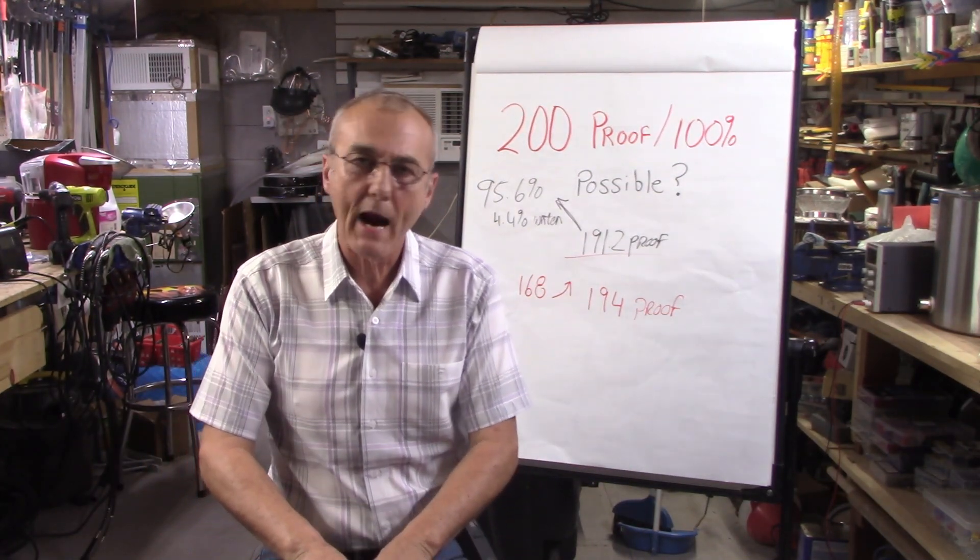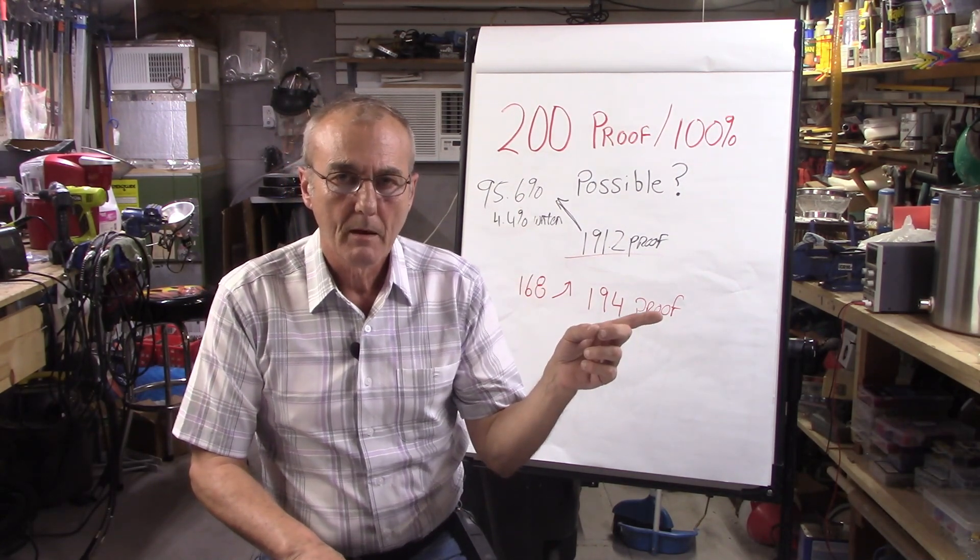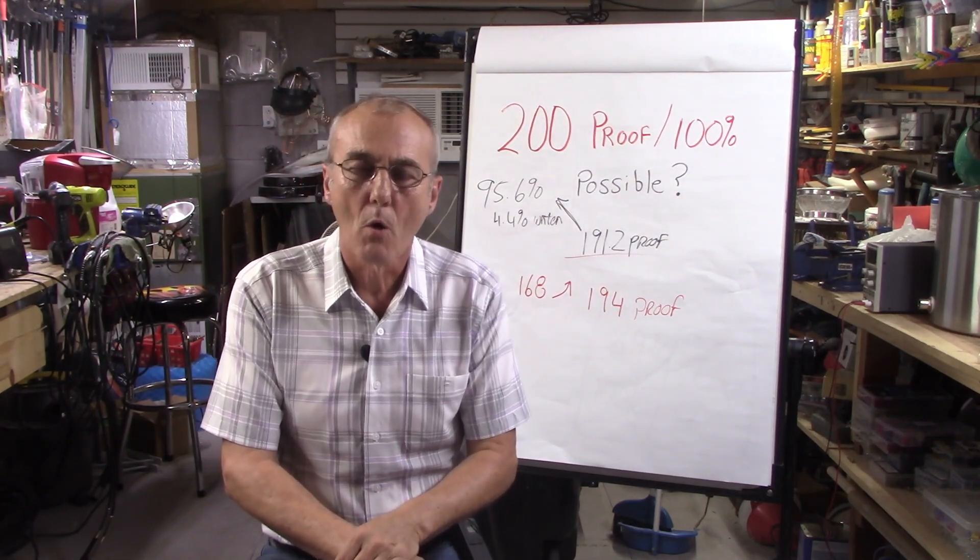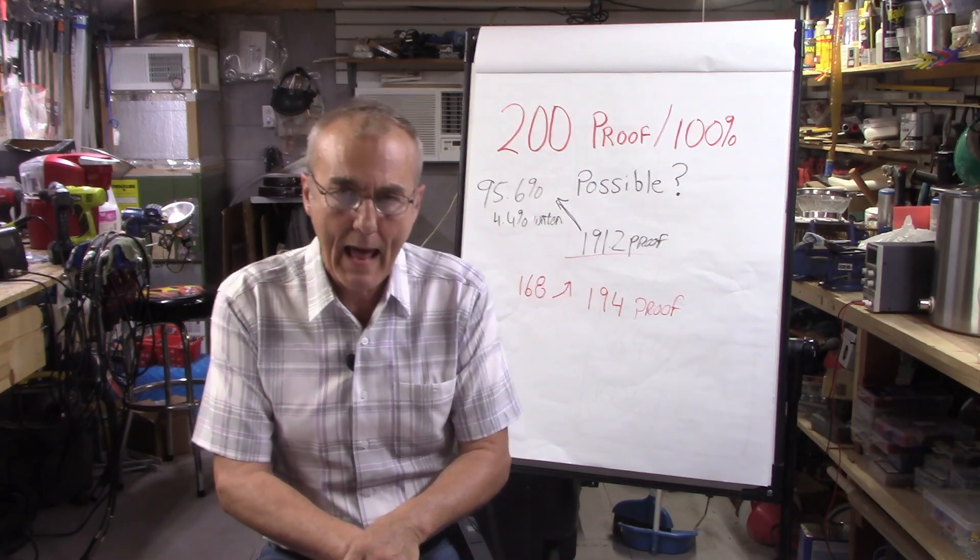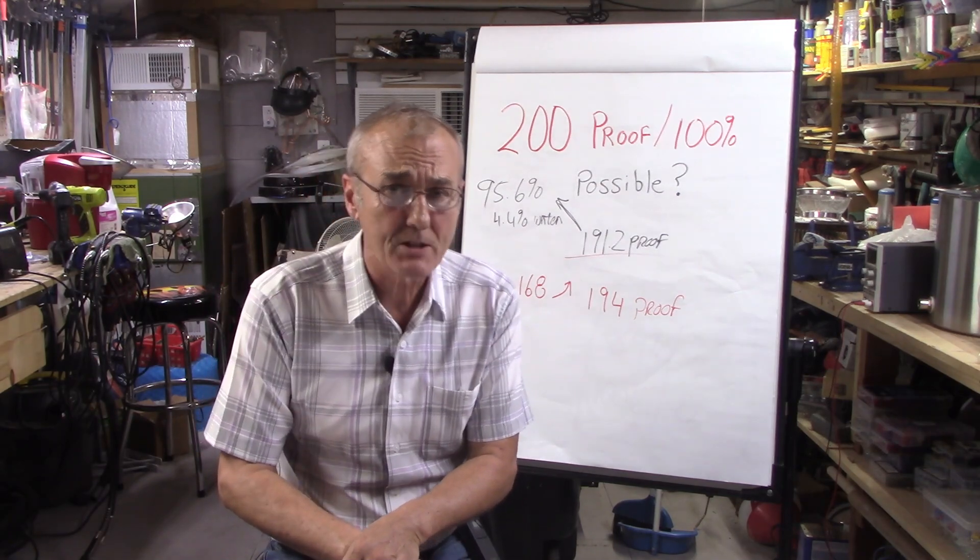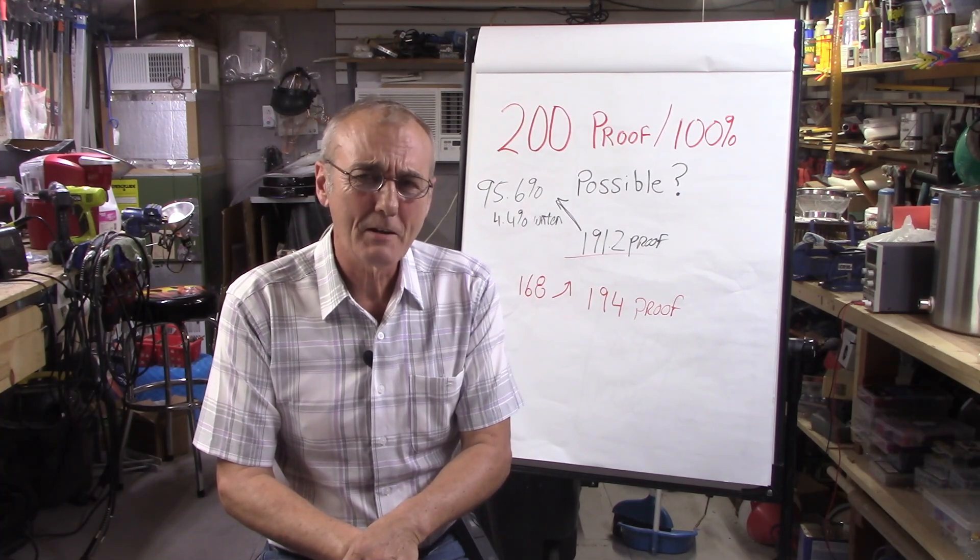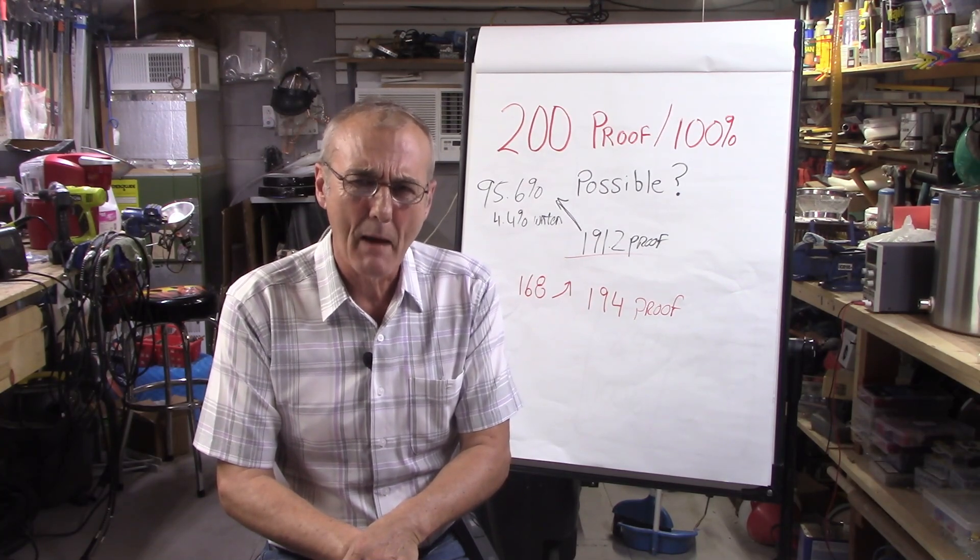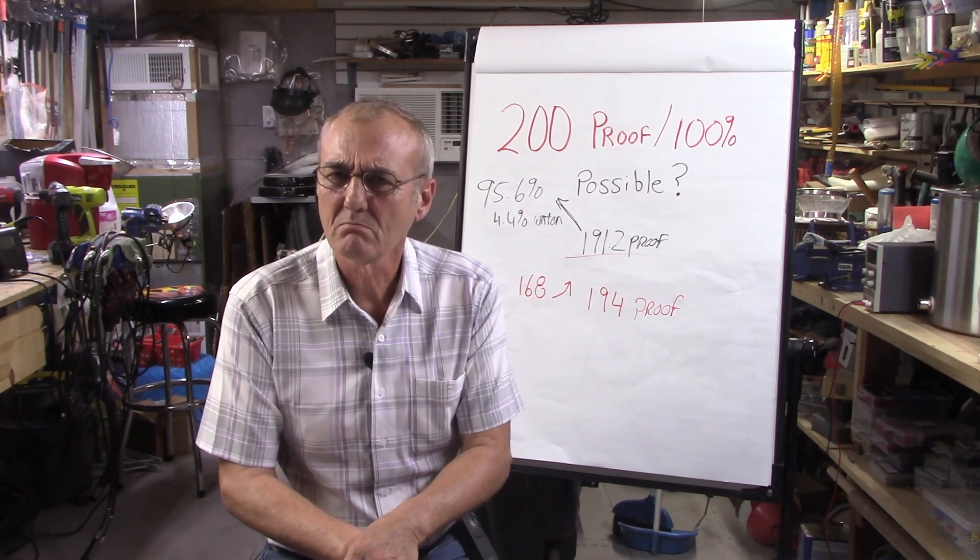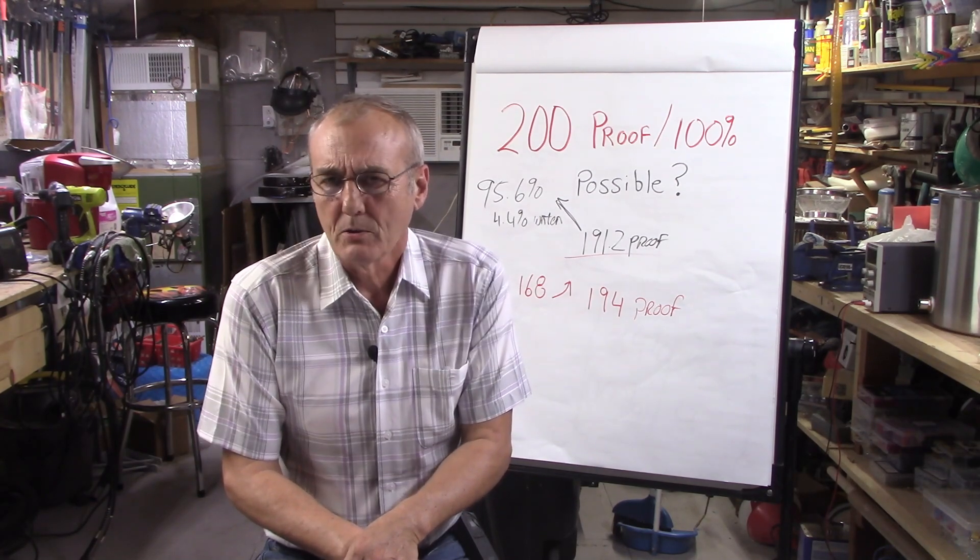Is it practical? Well, seeing that I took a quart and I had to use one and three-quarters pounds of molecular sieves in order to get it to 199, do you think that I could take a five gallon mash and have enough sieves to create a spirit? I highly doubt that.